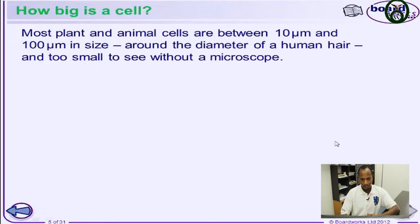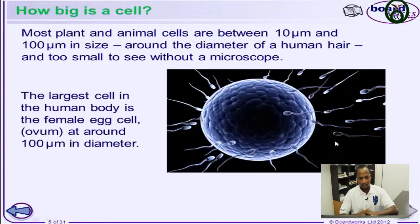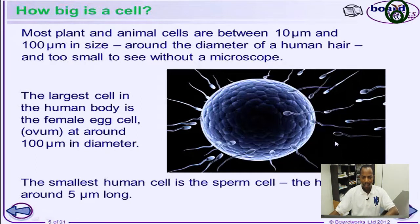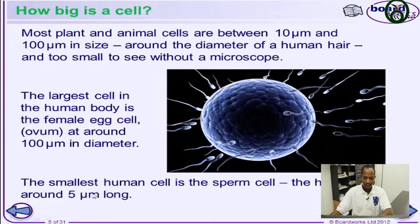Usually you can't see a cell with the naked eye — you use a microscope to look at a cell. In the body, the biggest cell is the female egg cell and the smallest is the sperm cell. The female egg cell is around 100 micrometers in diameter and the sperm cell is around 5 micrometers in diameter.